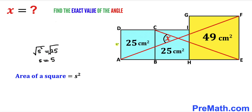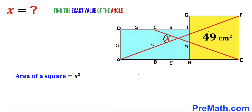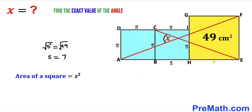So all side lengths of the blue squares are 5 cm each. Now focusing on the yellow square whose area is 49: S² = 49. Taking the square root on both sides, the side length S turns out to be positive 7 cm. So all side lengths for the yellow square are 7 cm each.